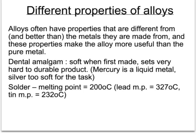For example, dental amalgam, made from mercury and silver, sets into a very hard mass after a period of time, so it doesn't wear down in the mouth. Solder has to have a very low melting point — in fact, its melting point is lower than either lead or tin from which it's made.